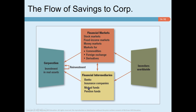Or they supply funds to financial intermediaries, for example banks, insurance companies, mutual funds, or pension funds. These financial intermediaries will then invest in financial markets. Ultimately, either way, the fund is channeled to corporations that are in deficit of cash — that means they need cash — and these funds are invested in positive NPV projects.